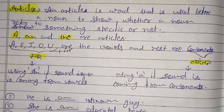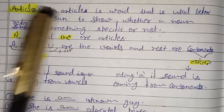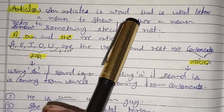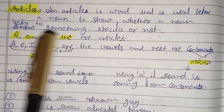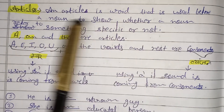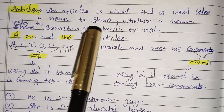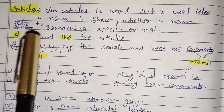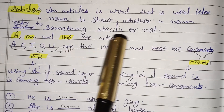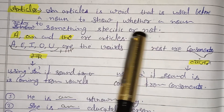In today's video, we will read articles. What are the articles? An article is a word that is used before a noun to show whether a noun is referred to something special or not.